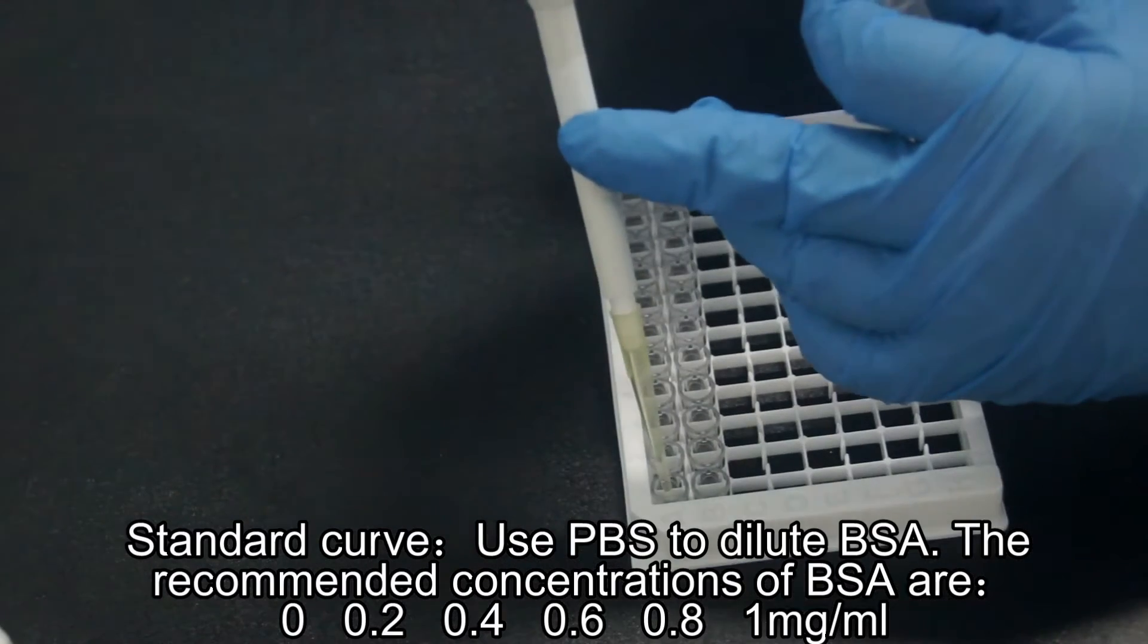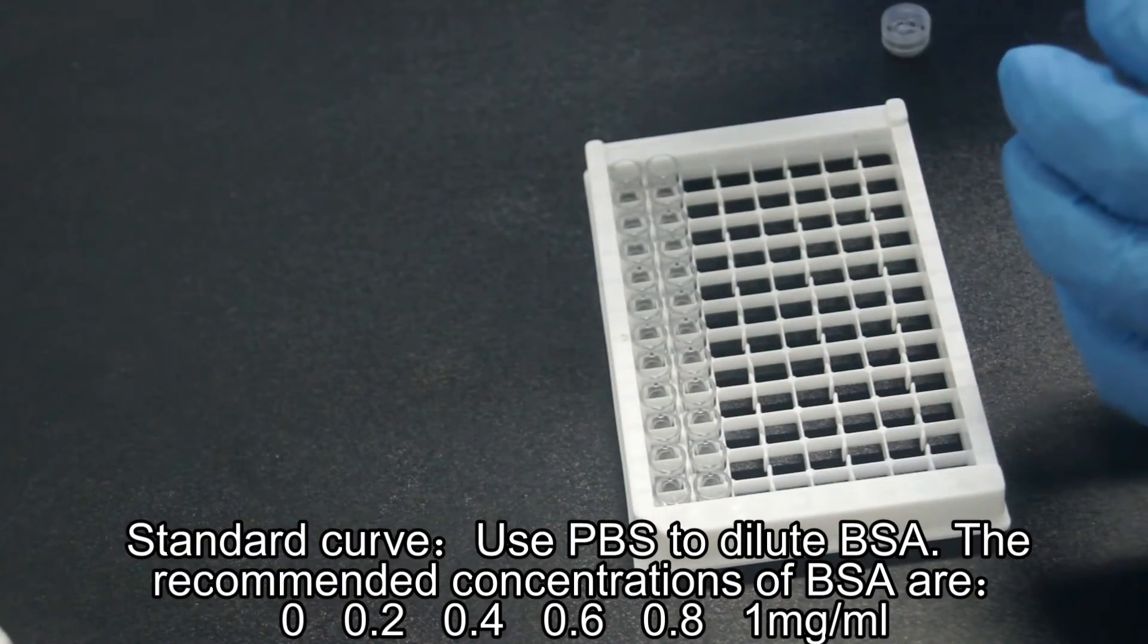Protein concentration measurement: Dilute the BSA with PBS. A duplicate is recommended for each concentration.